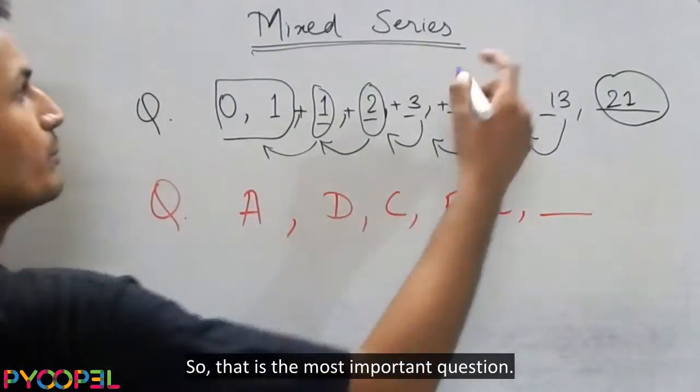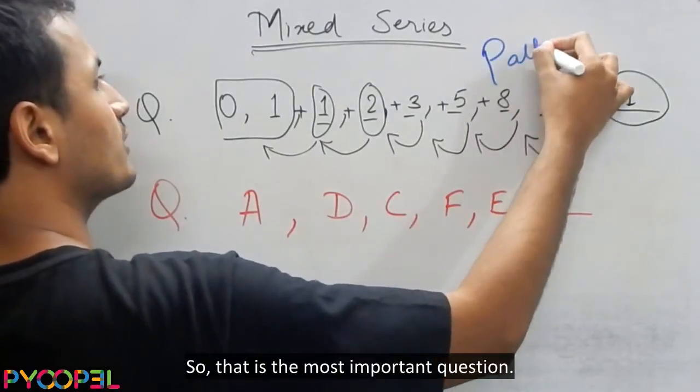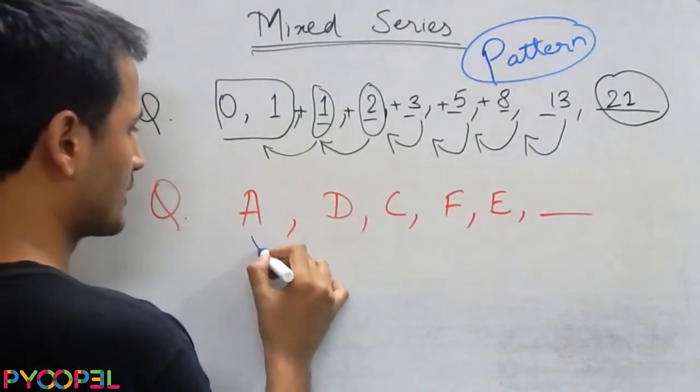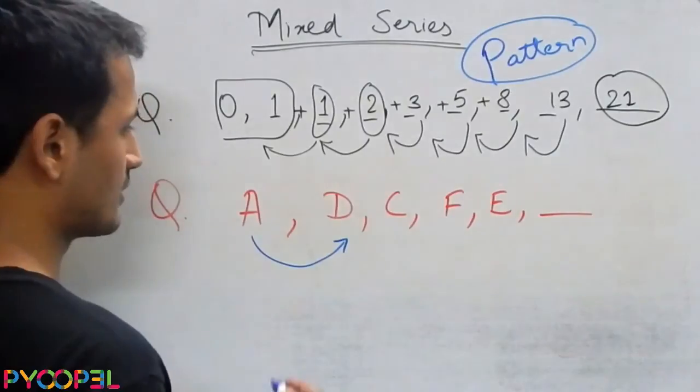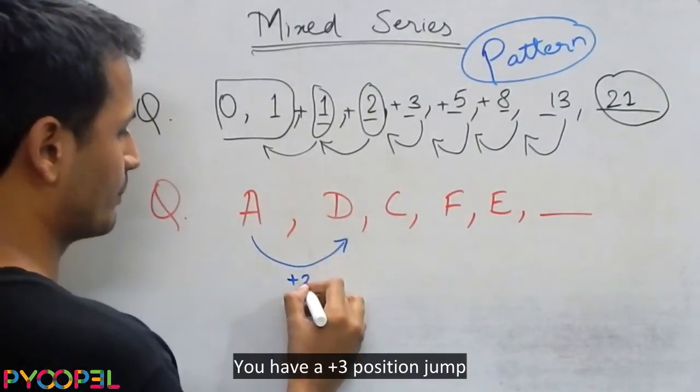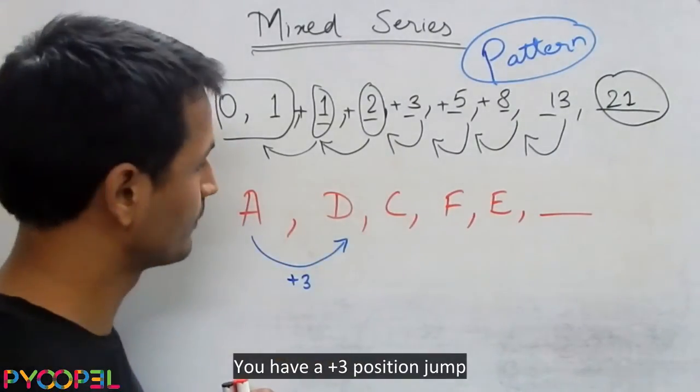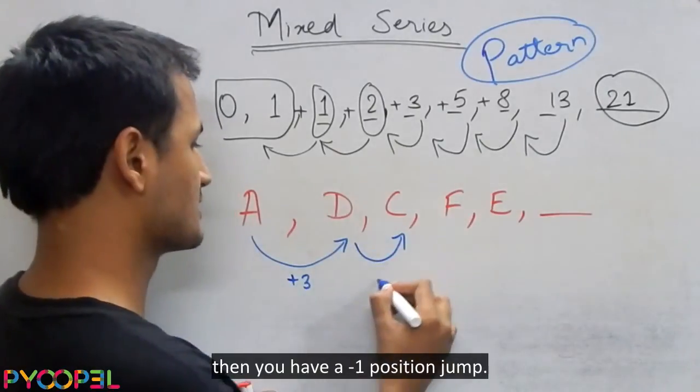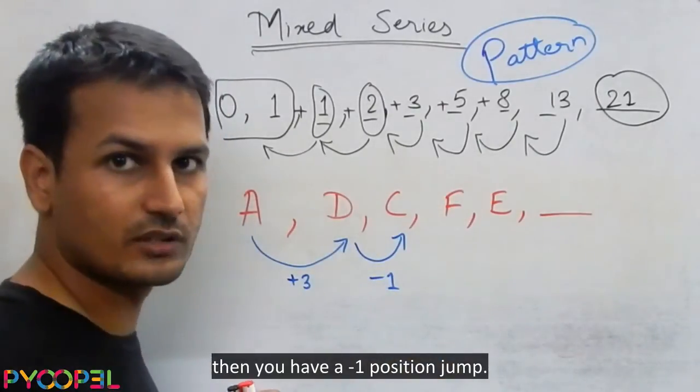How do you understand the pattern? So that is the most important question. You have a plus 3 position jump, then you have a minus 1 position jump.